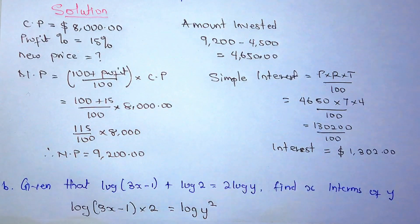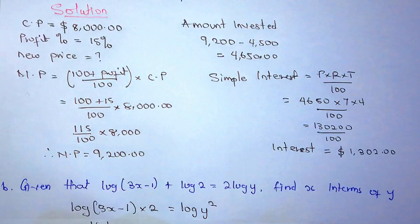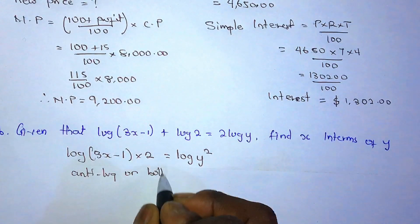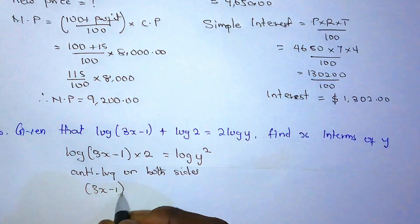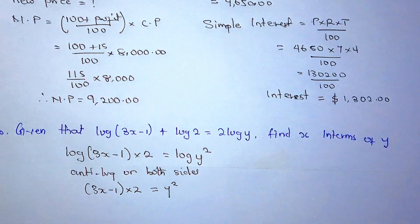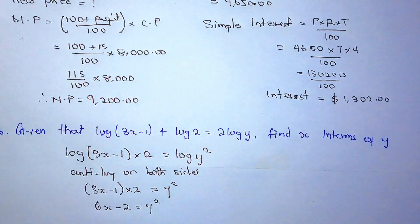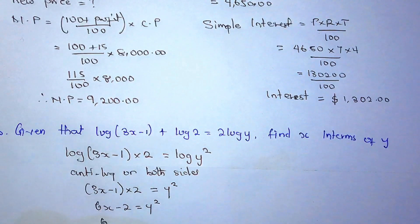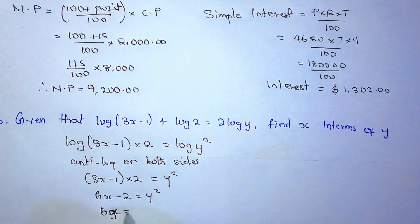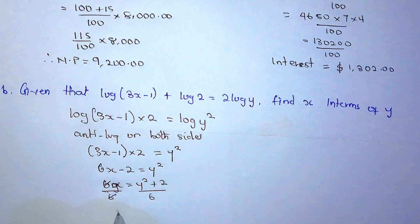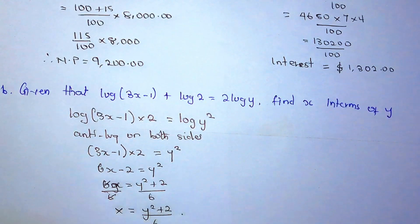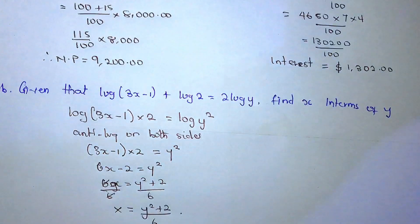Taking antilog on both sides, we get (3x − 1) × 2 = y². Expanding: 6x − 2 = y². We want x in terms of y, so 6x = y² + 2. Dividing by 6, we get x = (y² + 2) / 6. We have expressed x in terms of y. This answers question 1.